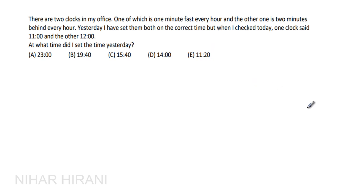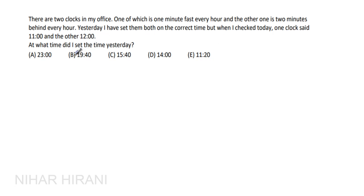Hello, let us solve this one. There are two clocks in my office: one of which is one minute fast every hour and the other is two minutes behind every hour. Yesterday I set them both on the correct time, but when I checked today, one clock said 11 and another clock said 12. At what time did I set the time yesterday?